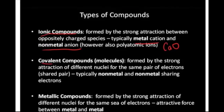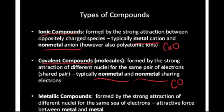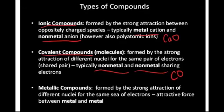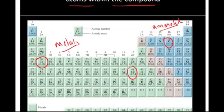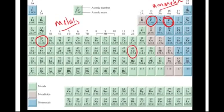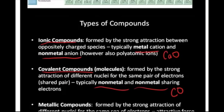For covalent compounds, also referred to as molecules, they're formed by the strong attraction of different nuclei for the same shared pair of electrons. Typically this type of bonding occurs between non-metals and other non-metals. So if you see the compound carbon monoxide, CO, you could look at the periodic table and know that carbon is a non-metal and oxygen is a non-metal, and predict right away that it is a covalent compound.